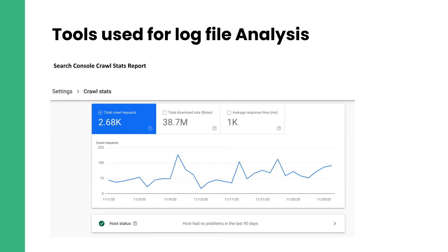Google Search Console recently came out with a crawl stats report, which is pretty cool. Everybody can access it in their Search Console just by going to Settings > Crawl Stats, and you can get a whole bunch of data there without actually getting access to logs. Because sometimes, as SEOs, getting the log files — particularly from enterprise clients — can be quite difficult. It does give us a little insight into what's going on with the website.